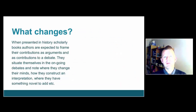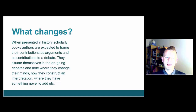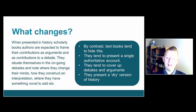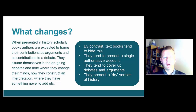So it's a much more tentative and less sure-footed way of constructing a text than the school textbook author tends to adopt. When presenting a scholarly history book, authors are expected to frame their contribution as arguments and contributions to a debate — they situate themselves in an ongoing discussion, show where they've changed their minds, and where they have something novel to add. By contrast, textbooks tend to hide that; they present a single authoritative account, cover up debates and arguments, and present a fairly dried-out version of history that avoids the interesting academic enterprise of constructing history.